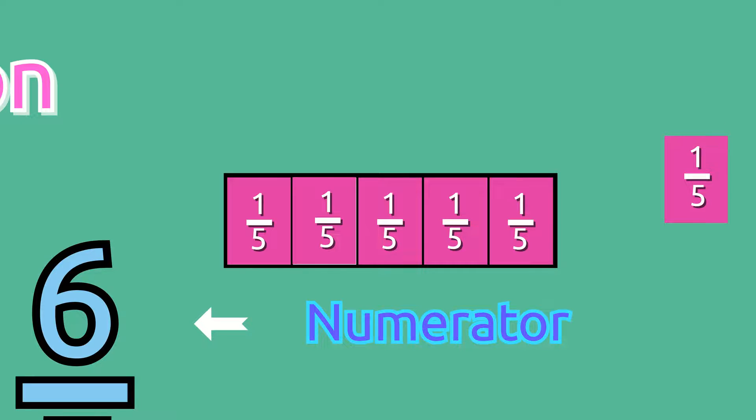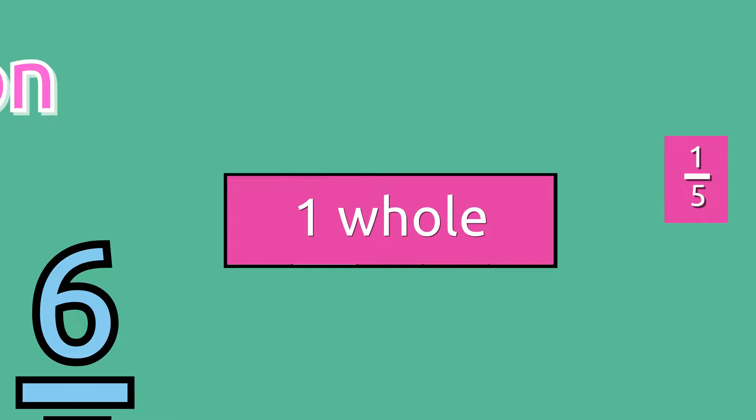So I can simply represent the additional fifth as a fraction next to our whole. 6 fifths is the same as one whole and one fifth.